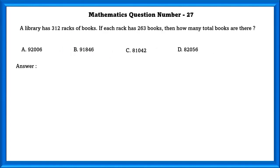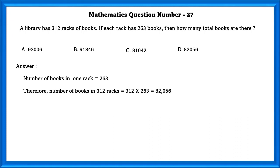Mathematics question number 27. A library has 312 racks of books. If each rack has 263 books, how many total books are there? Number of books in one rack is 263. Number of books in 312 racks is equal to 312 multiplied by 263, which is equal to 82,056 books.